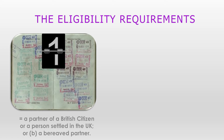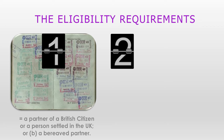Element number one: the applicant's last grant of limited leave must have been as a partner. Please make sure that this is not the fiancée or proposed civil partner application — this should be solely the partner application of a British citizen or a person settled in the UK, or as a bereaved partner. They should have leave as a partner or as a bereaved partner.